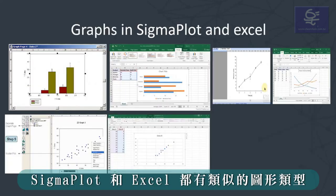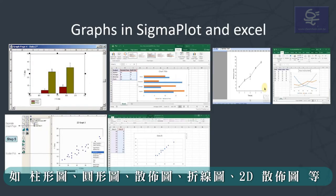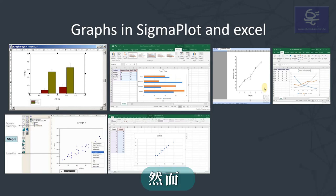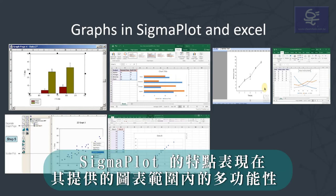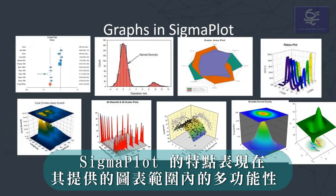Both Sigmaplot and Excel have similar graph types — column, bar graphs, pie charts, scatter plots, line plots, 2D scatter plots, etc. However, Sigmaplot's prominence shines through with its versatility in the range of graphs offered.